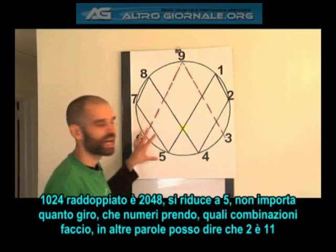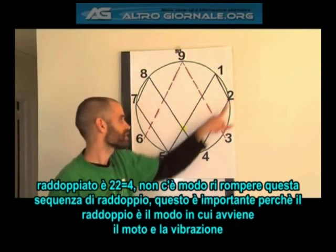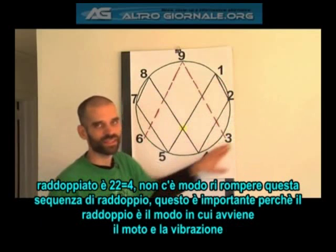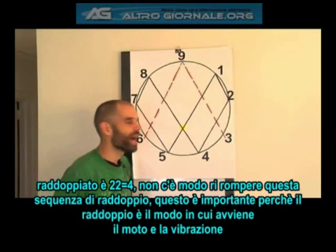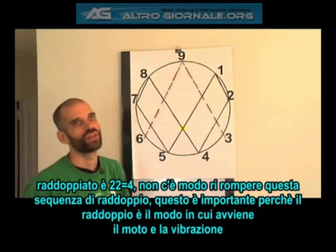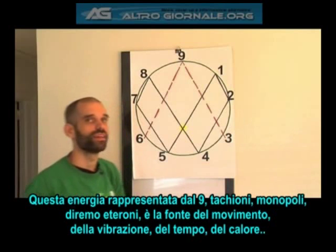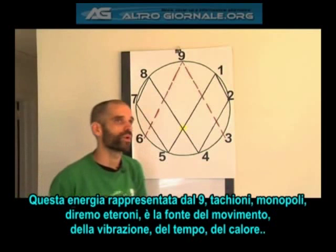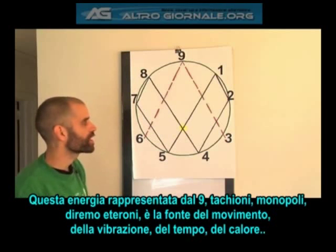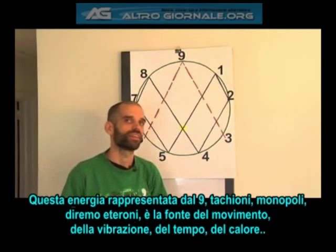In other words, I could say this is 11, where my 2 is here, because 1 plus 1 is 2. 11 doubled is 22, and 2 plus 2 is 4. There is no possible way to break this doubling sequence. Why is that significant? Because doubling is how vibration and motion occurs. And this energy — which is going to be represented by our number 9, this tachyon, monopole, what we are going to call etherons — this energy is the source of all motion, of all vibration, of all time, of heat. It's the source of life. It's what keeps everything moving forward.